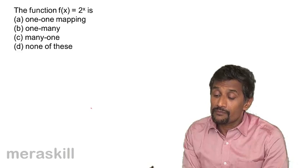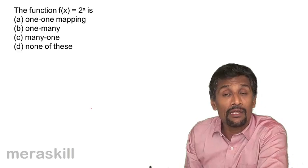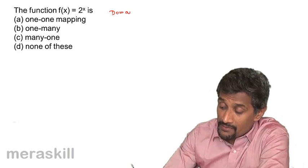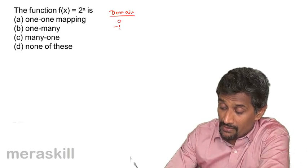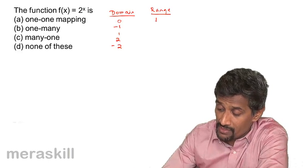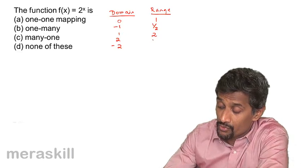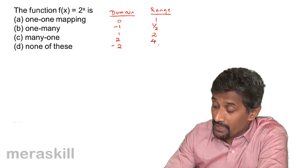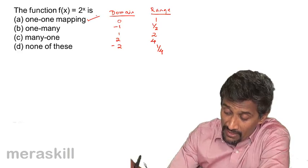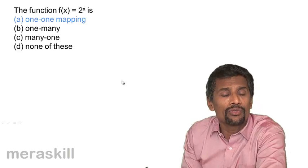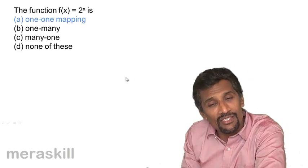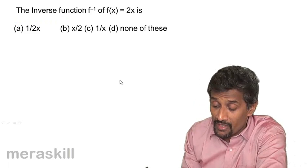The function f(x) = 2^x — is it a one-one mapping, one-many, or many-one? Consider domain values 0, −1, 1, 2, −2: the range values are 1, 1/2, 2, 4, 1/4 respectively. Each domain value gives a different range value, so it is clearly a one-one mapping. Every image has a unique pre-image and every pre-image has a unique image.